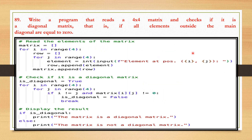The next program reads a 4x4 matrix and checks if it is a diagonal matrix — that is, if all elements outside the main diagonal are equal to 0. An empty matrix list is created and a nested loop reads elements from the user. A boolean variable is_diagonal is initialized to True. Iterating over each element at position [i][j], if i != j and the element is non-zero, is_diagonal is set to False and the loop breaks. Finally, if is_diagonal is True the program prints that the matrix is diagonal; otherwise it prints that it is not.